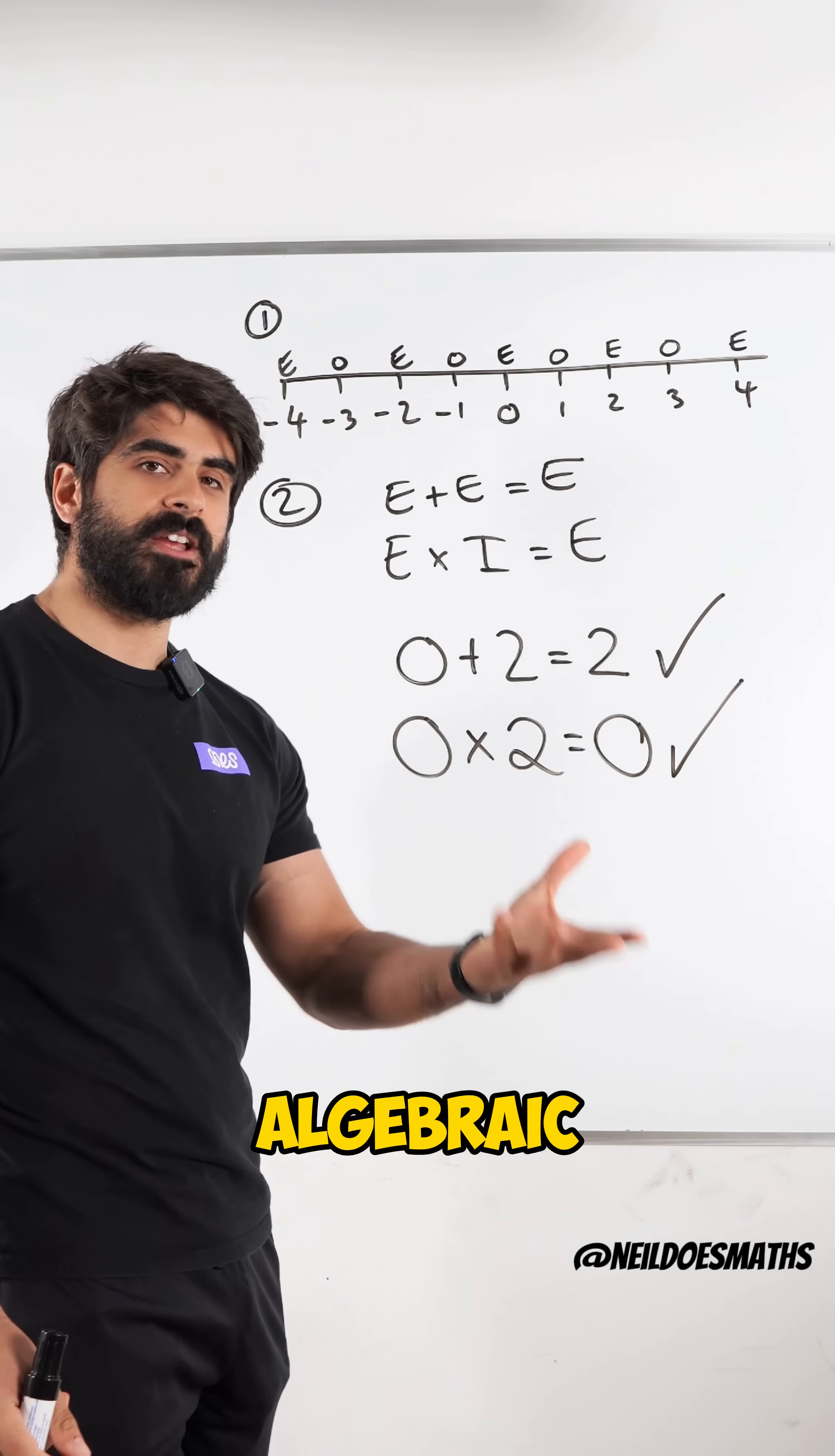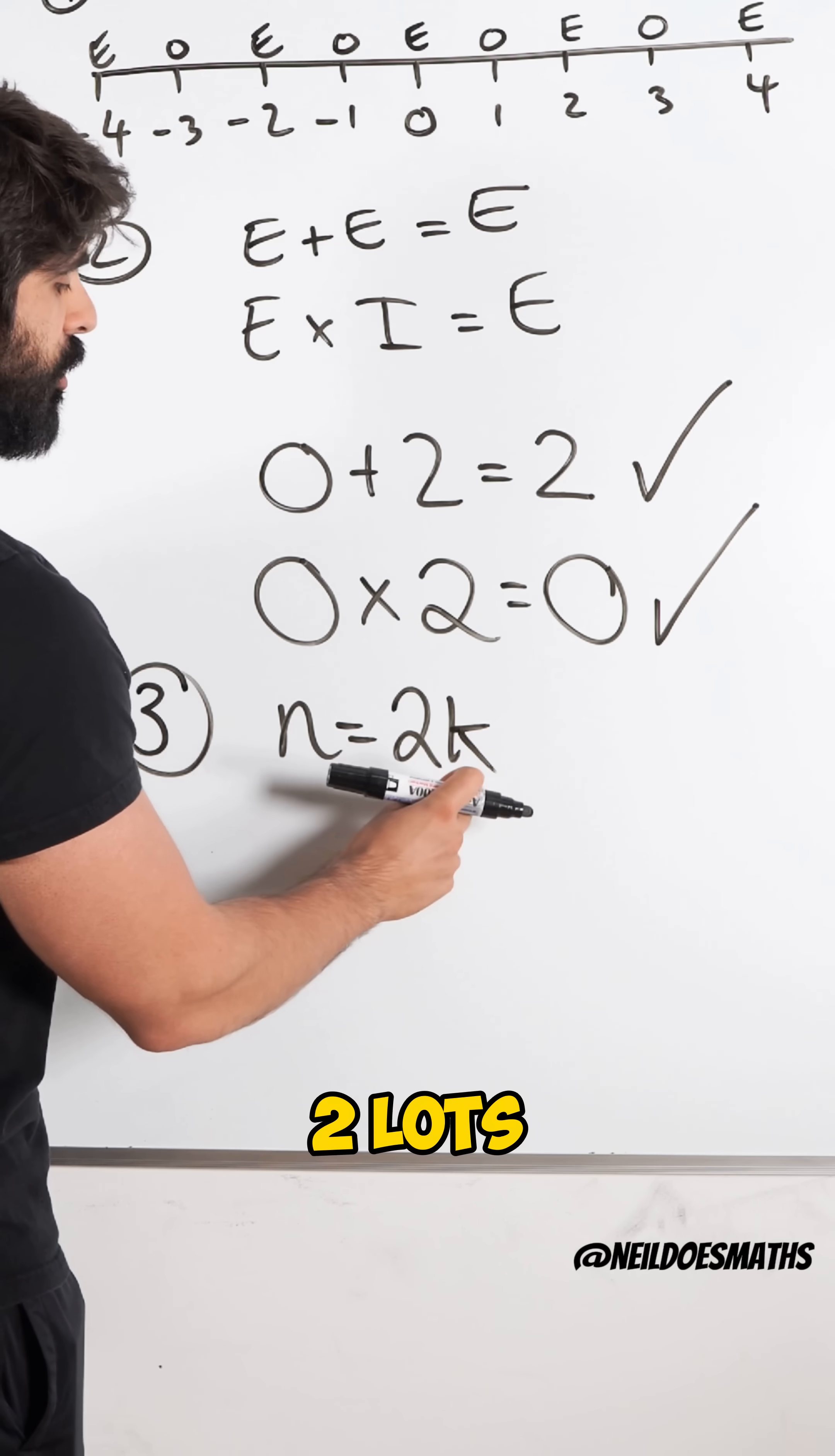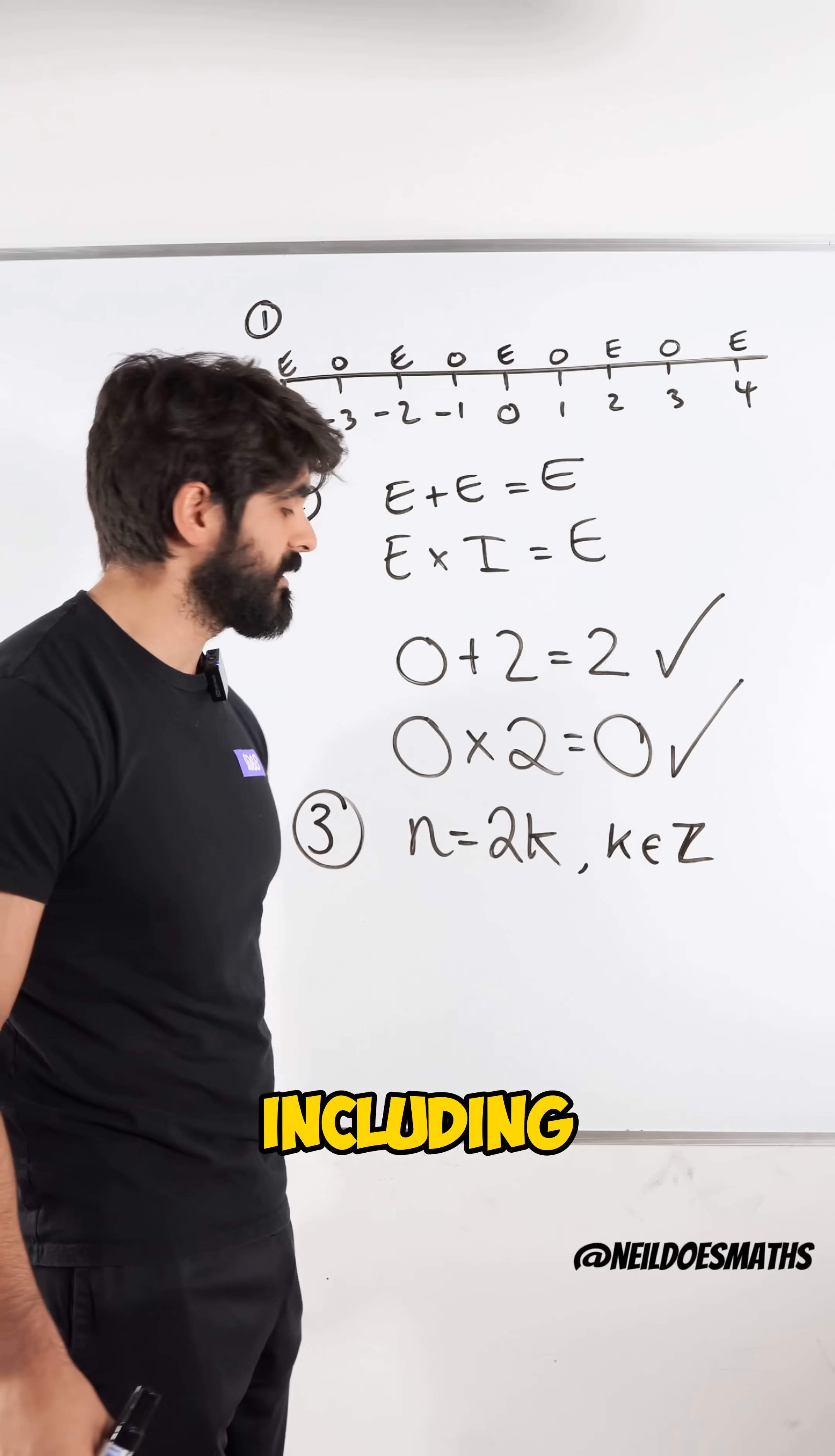And the third way, which is the algebraic way, is all even numbers must be in the form 2k. So all numbers must be in the form of two lots of k, where k is an integer. So it could be positive numbers, negative numbers, including zero.